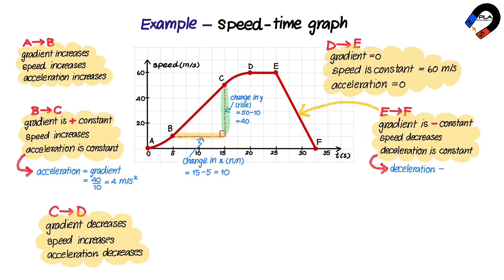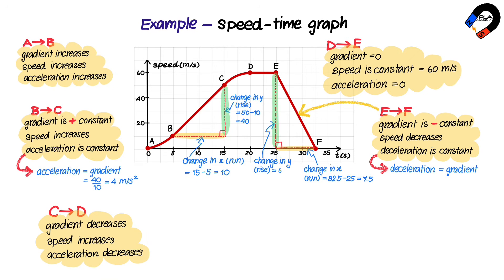We can find the constant deceleration by the gradient of the graph. We draw a right triangle: the change in x (run) is equal to 32.5 minus 25, which equals 7.5. The change in y (rise) is equal to 60. Therefore, the deceleration is equal to 60 divided by 7.5, which equals 8 meters per second squared.